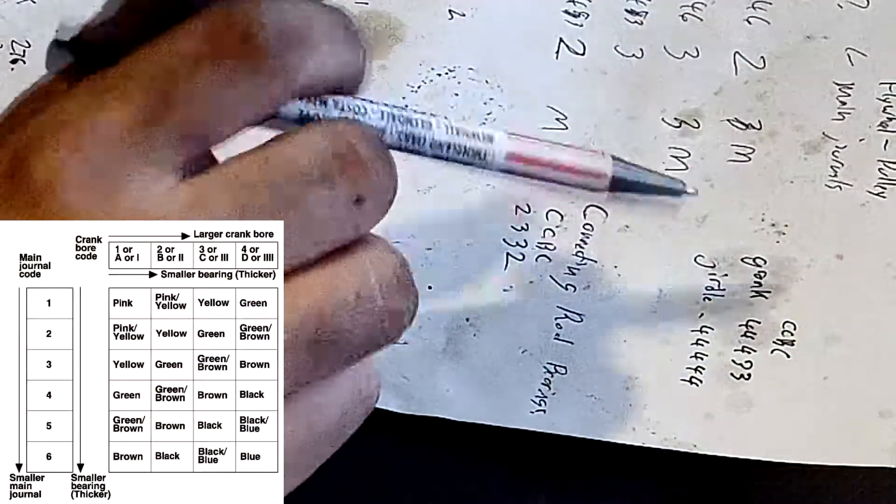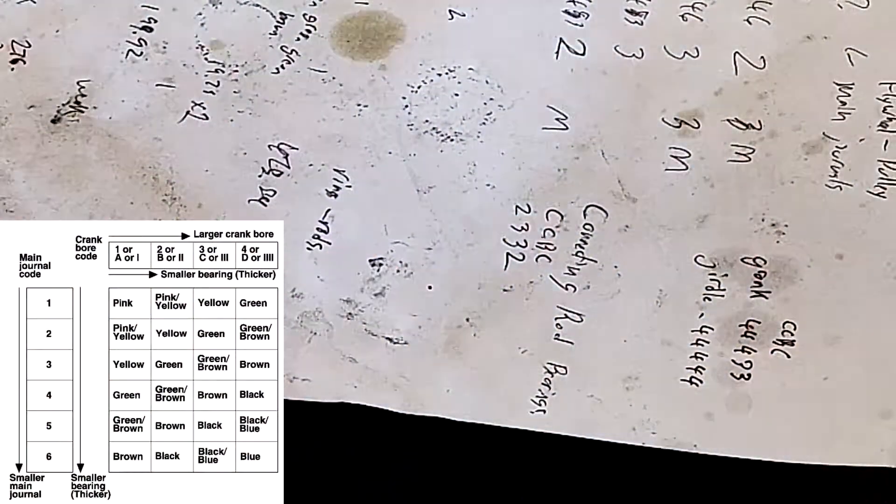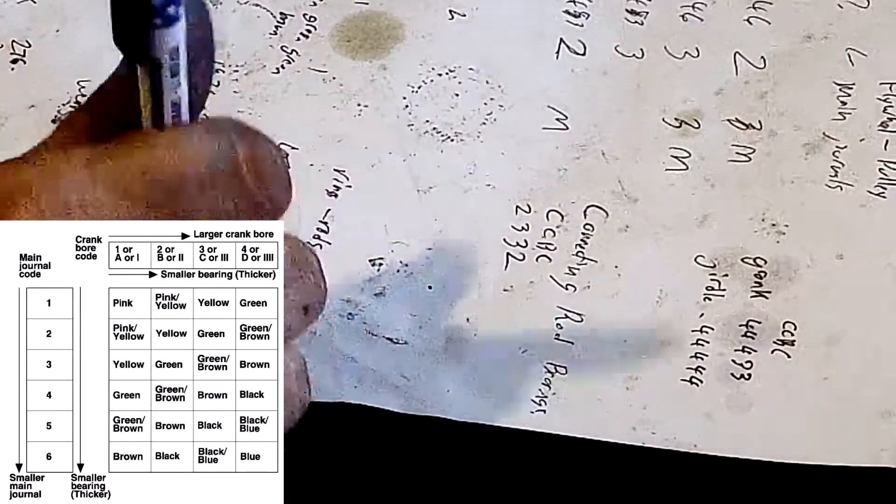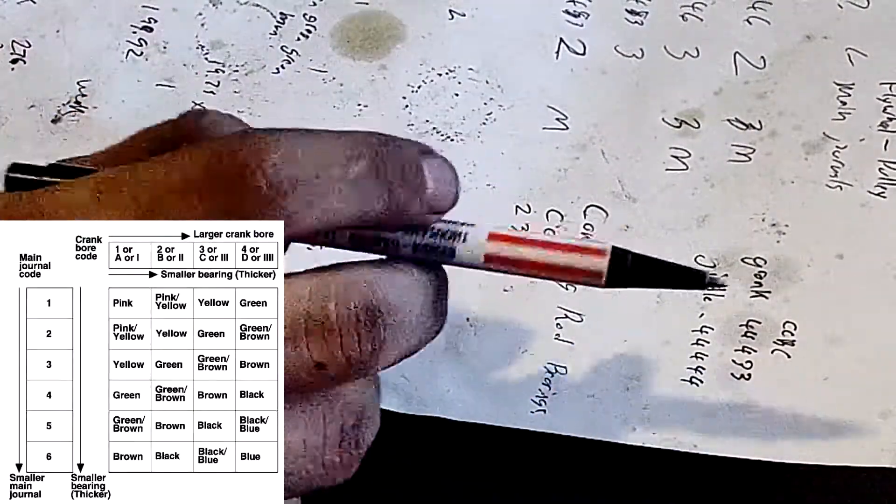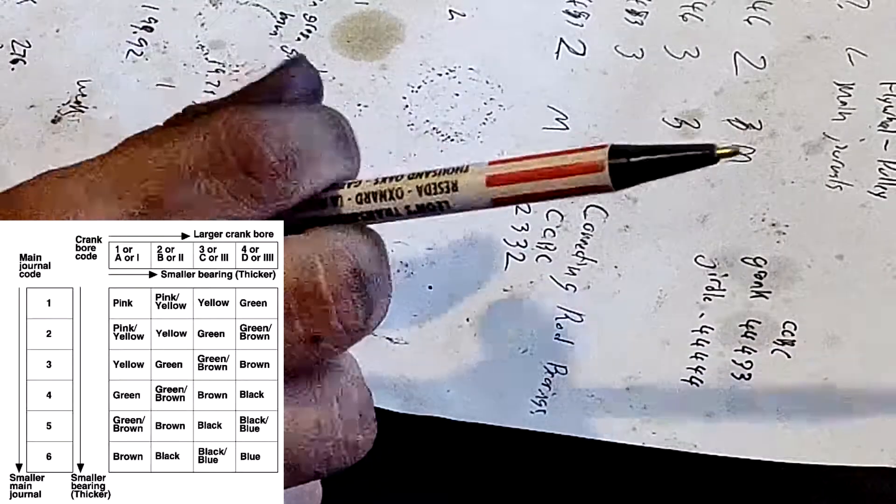I'm going to throw up on the screen the chart right now, actually I'll put it like in a corner like where my hand is right now so you guys can see it. So our main journal code - actually when there's letters there's letters, so we'll go with the letters which is C.